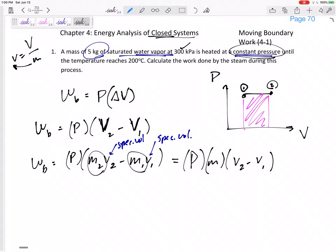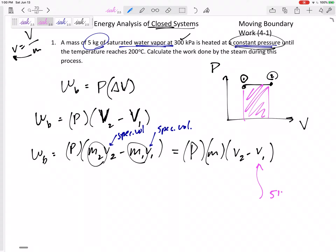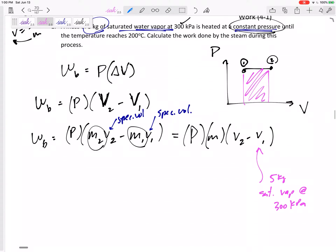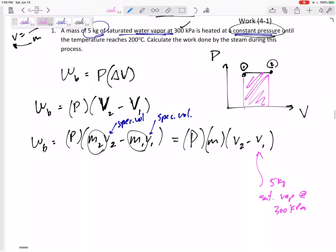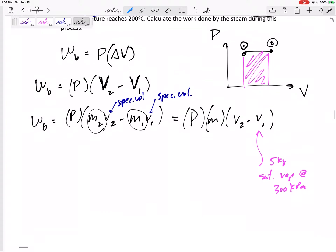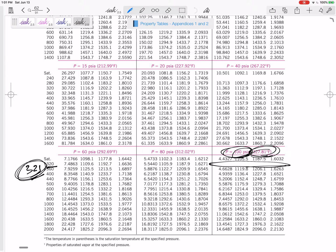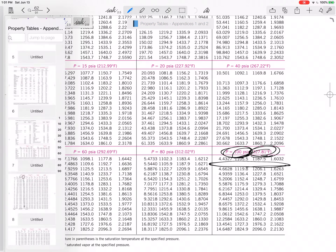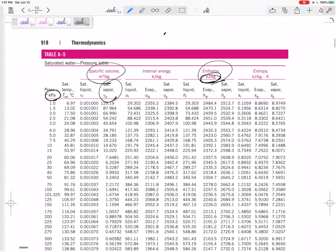What is v1? State 1 is 5 kilograms of saturated vapor at 300 kPa. If I have water that is saturated vapor at 300 kPa, what would you do? You would go to table A5. We're in SI units, so let's go to table A5 for a pressure of 300 kPa.